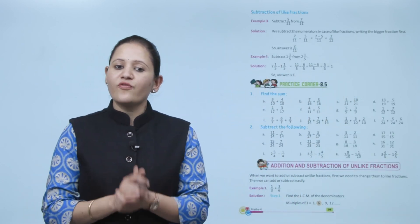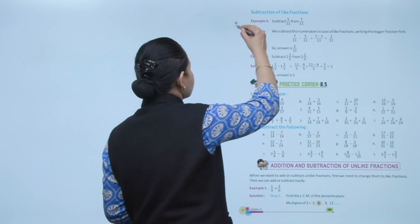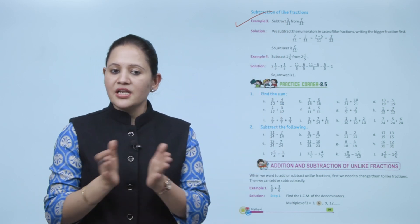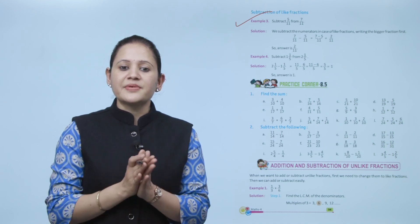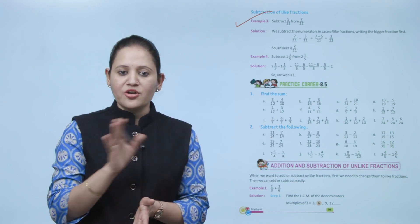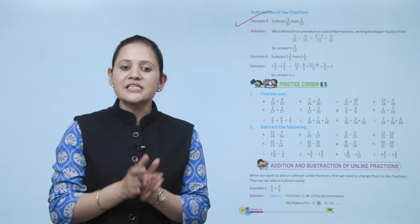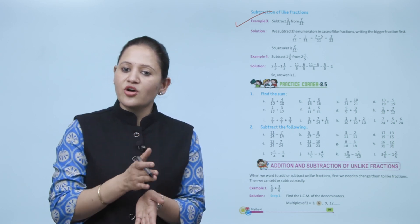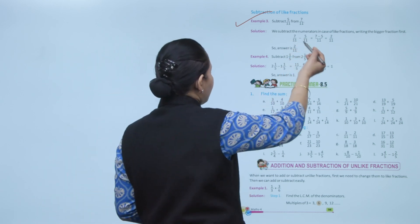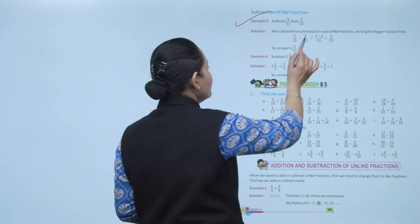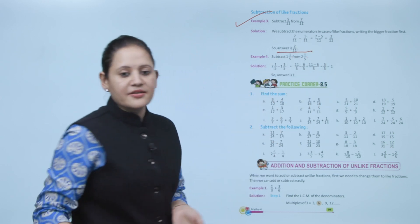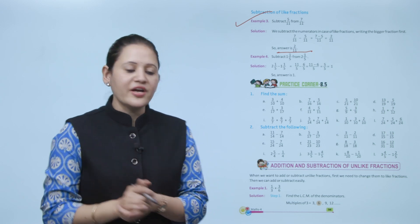Next is subtraction of like fractions: subtract 5 upon 11 from 7 upon 11. Since they are like fractions, simply subtract the numerators and write the common denominator. 7 upon 11 minus 5 upon 11 equals 7 minus 5 upon 11, which is 2 upon 11. Next is practice corner 8.5.